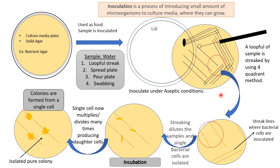Inoculation must be done under aseptic conditions. After that, you incubate the plate. In this zoomed view, the streak lines are where your bacterial cells are inoculated. From the first quadrant, two streak lines continue into the second quadrant; from the second into the third; and from the third into the fourth. This is how bacterial cells get inoculated and isolated — as you streak further, the sample is diluted and single bacterial cells are separated.